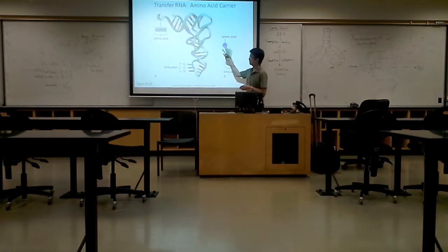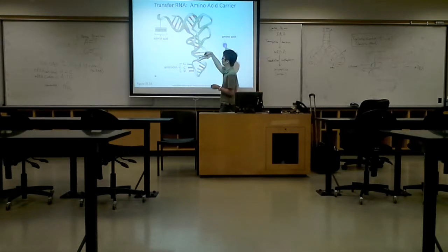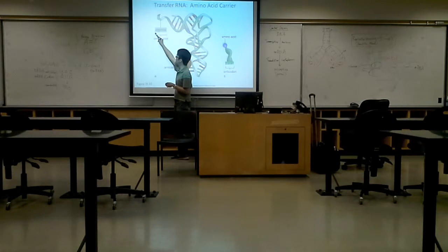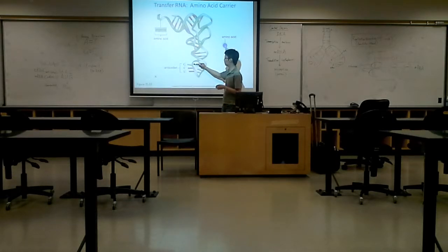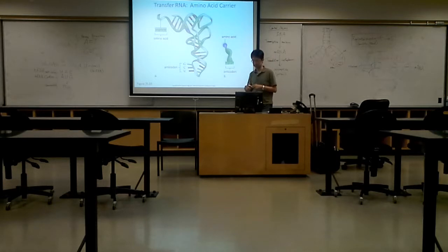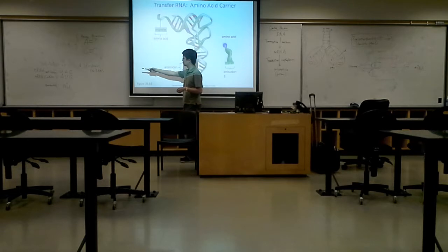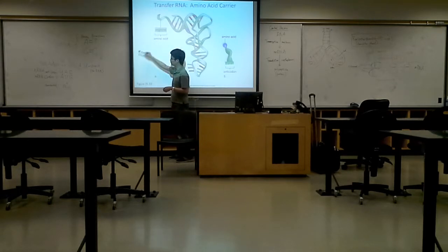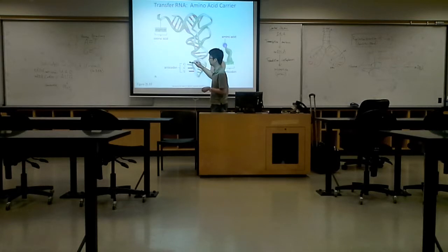This is the cloverleaf structure of the transfer RNA. The transfer RNA looks like a clover. On one end, it carries the amino acid; on the other end, you have the anticodon. This anticodon will match the codon on the messenger RNA. In this example, the amino acid will be methionine, and the anticodon will be UAC.